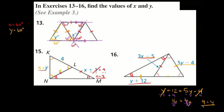So y is equal to 4. Plugging y into 5y minus 4: 5 times 4 is 20, minus 4 equals 16. So this side is equal to 16, this side is equal to 16, this side is equal to 16, and this side is also equal to 16. Now to solve for x, we set the expression 3x minus 5 equal to the known length of 16.